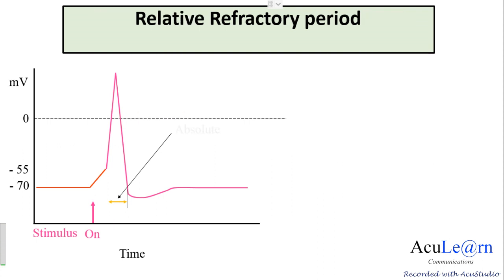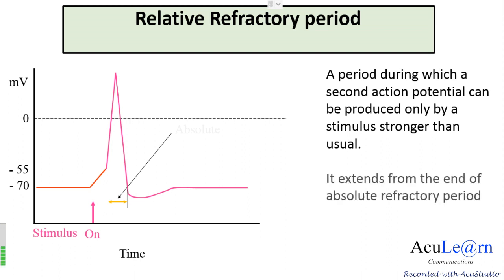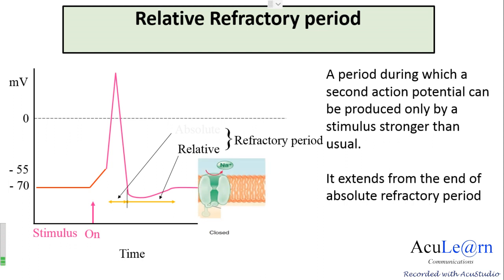The next period is called the relative refractory period, and it is a period during which a second action potential can be produced only by a stimulus stronger than usual. That is, it is a short period during which the membrane will show a response only if the strength of the stimulus is more than the threshold — a supra-threshold stimulus. It extends from the end of the absolute refractory period until the resting membrane potential is achieved. During this period the conformation of the voltage-gated sodium channels is closed but capable of opening.